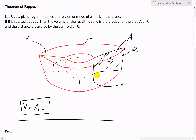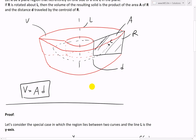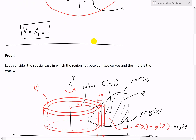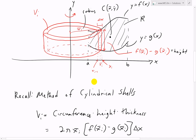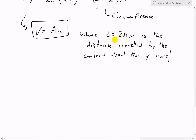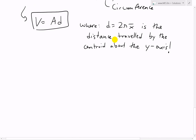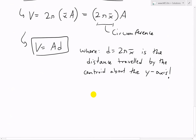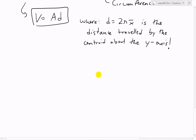We just basically solved it for this special case of the region bounded between two curves. The general version works for any line. It's quite remarkable — you can solve for the full volume just by finding the area and the distance traveled by the centroid, which is pretty cool.